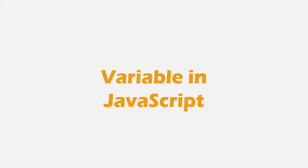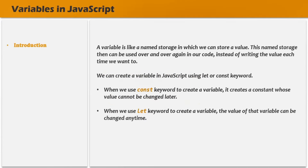Let's start this lecture by understanding what variables are in JavaScript. Variables are the fundamental concept of any programming language. A variable is like a named storage in which we can store a value, and this named storage can be used over and over again in our code instead of writing the value each time. In JavaScript, we can create a variable using the let or const keyword.